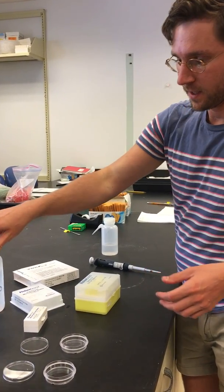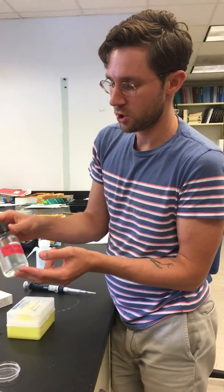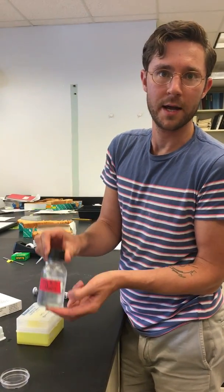Water and Brubaker quack solution - this is the medium in which pollen will germinate. It's sugar water with some ions in it.